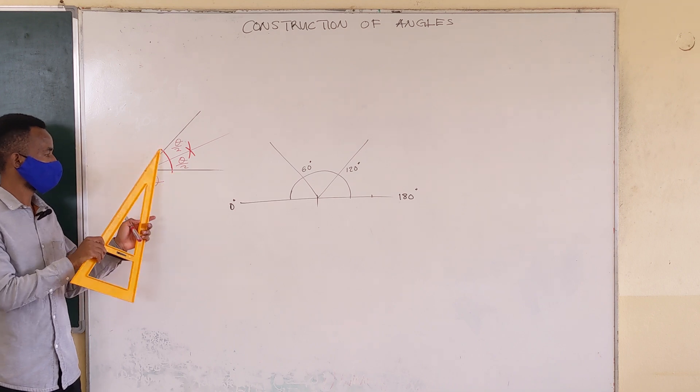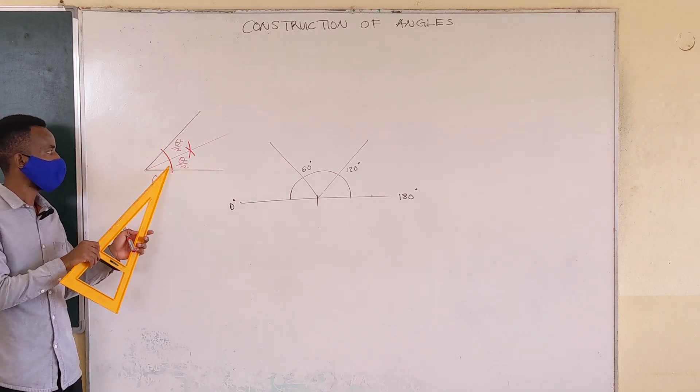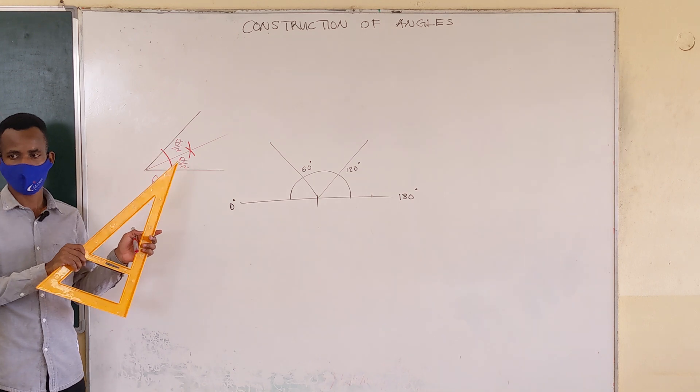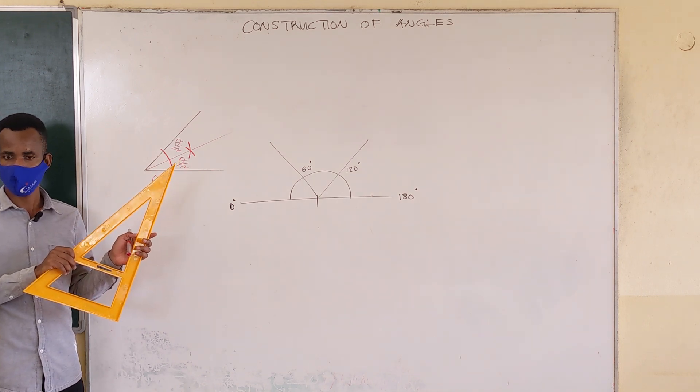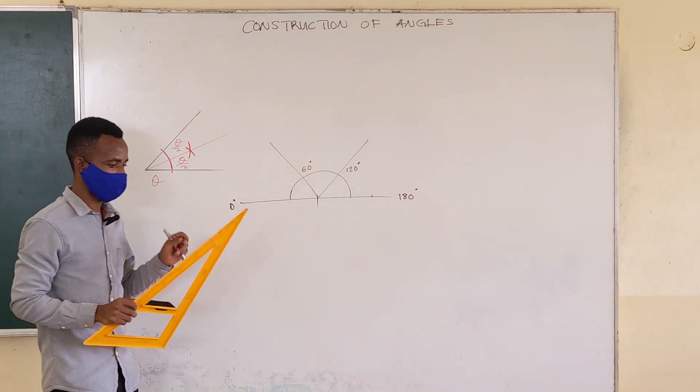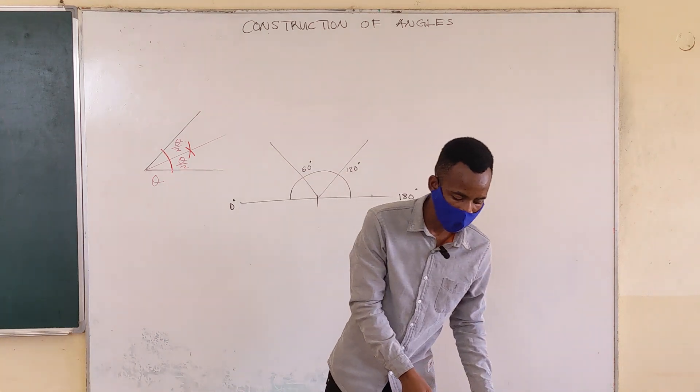So if this was 60 degrees, if this is 0, this is 60, then this would be 30. You get the point? So that is how you bisect an angle.